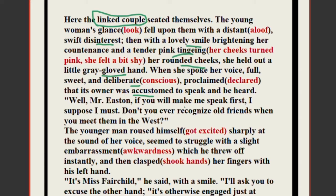She said: 'Well, Mr. Easton, if you will make me speak first.' So we come to know one person of the linked couple is Mr. Easton, and this Mr. Easton was known to the young woman. She asked: 'Don't you ever recognize old friends when you meet them in the West?' — just as you would recognize a friend if you met them unexpectedly somewhere else.